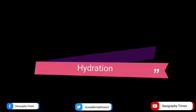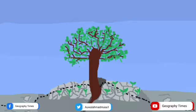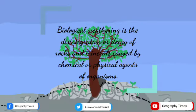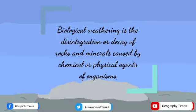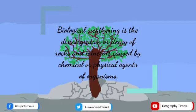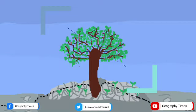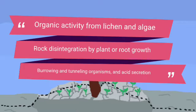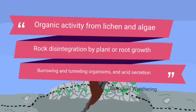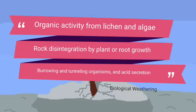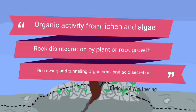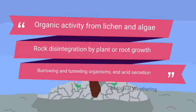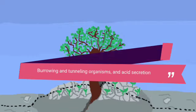3. Biological weathering is the disintegration or decay of rocks and minerals caused by chemical or physical agents of organisms. Examples include organic activity from lichen and algae, rock disintegration by plant or root growth, burrowing and tunneling organisms, and acid secretion.